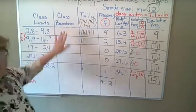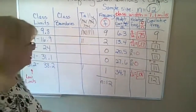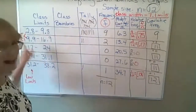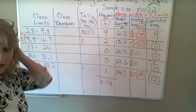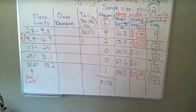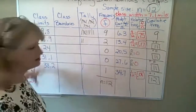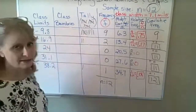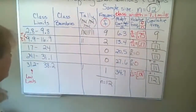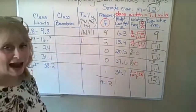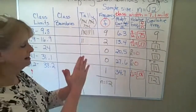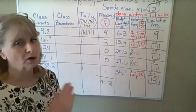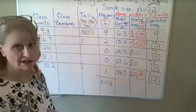I want to start here with the class boundaries. Our class limits are frequently just whole numbers, not usually by tenths. The only reason I did these in tenths was because our data went to the tenths place. Often data is just whole numbers, which makes it a little bit easier. Class boundaries are what you use for different kinds of graphs when you want the classes to be right up next to each other without any space in between them.